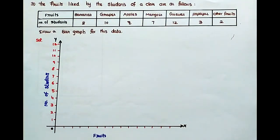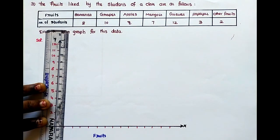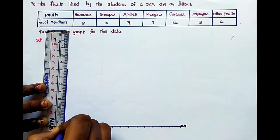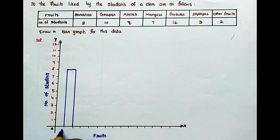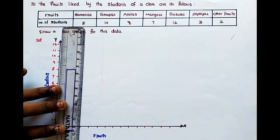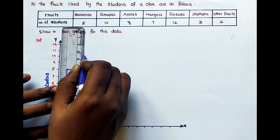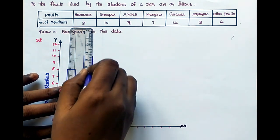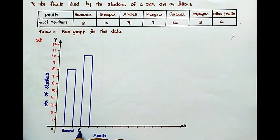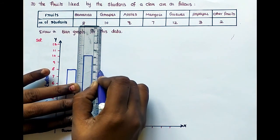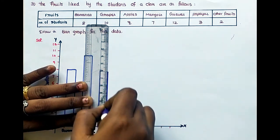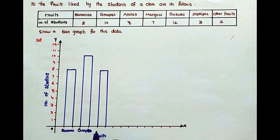Now first one, bananas. How many students? Here the 8. That is banana. Next, grapes, 10 students. Next, apples, 8 students.